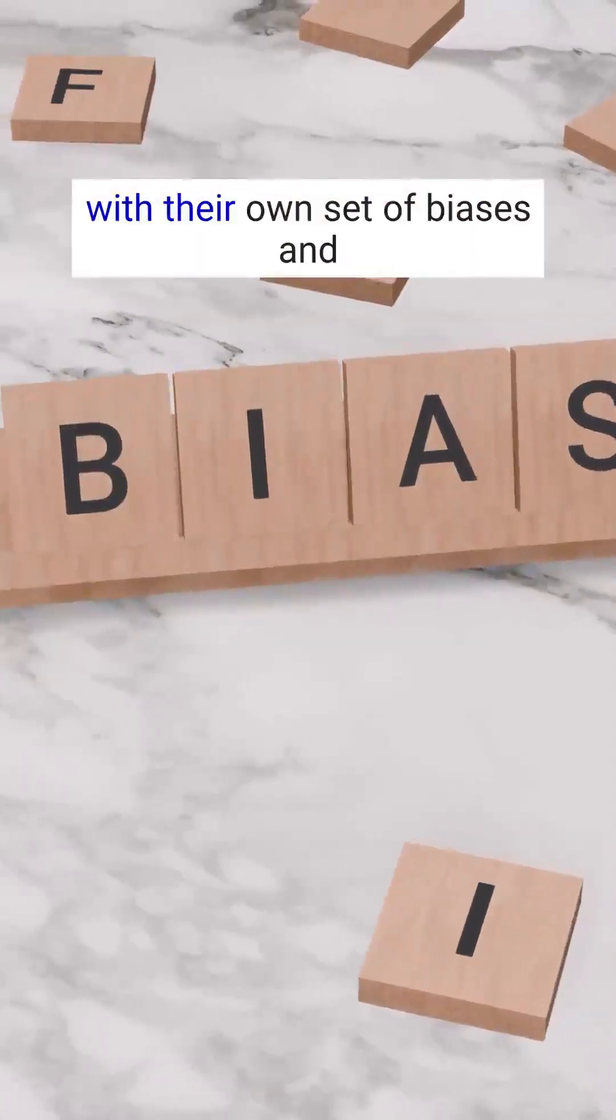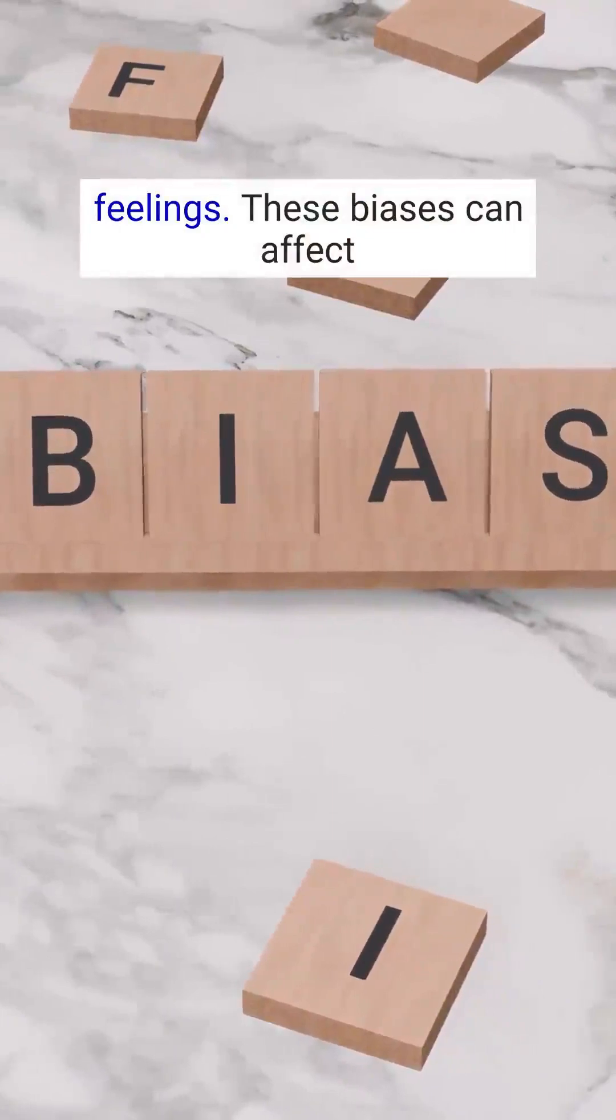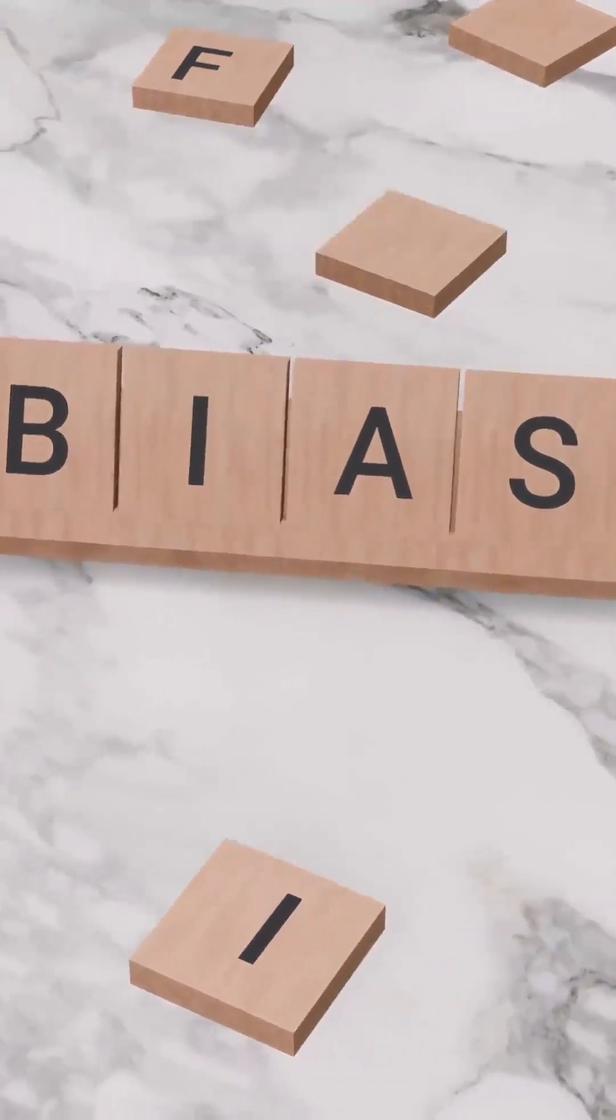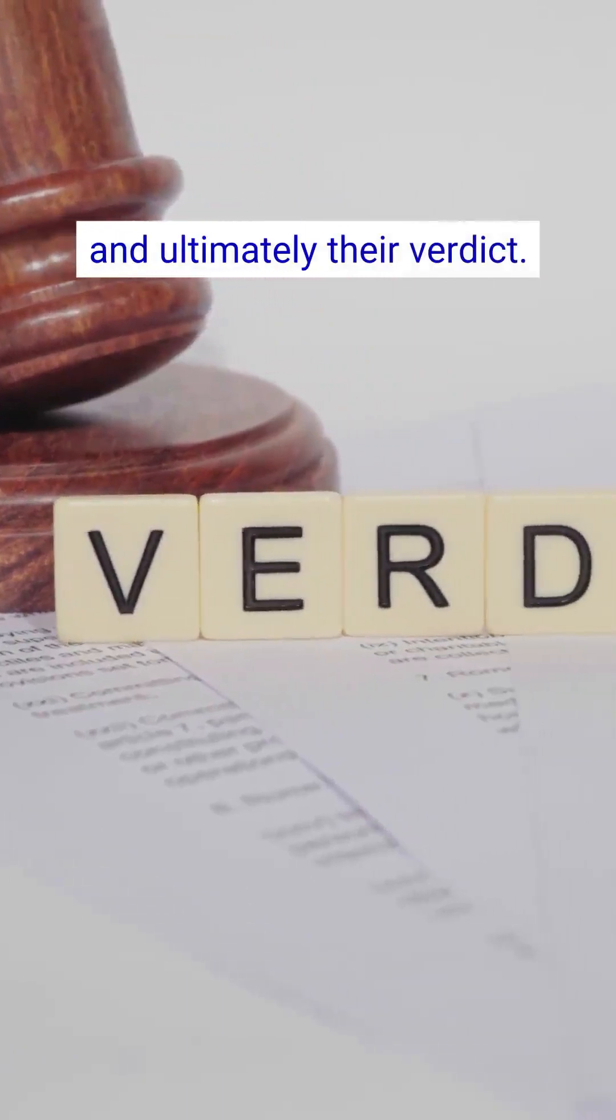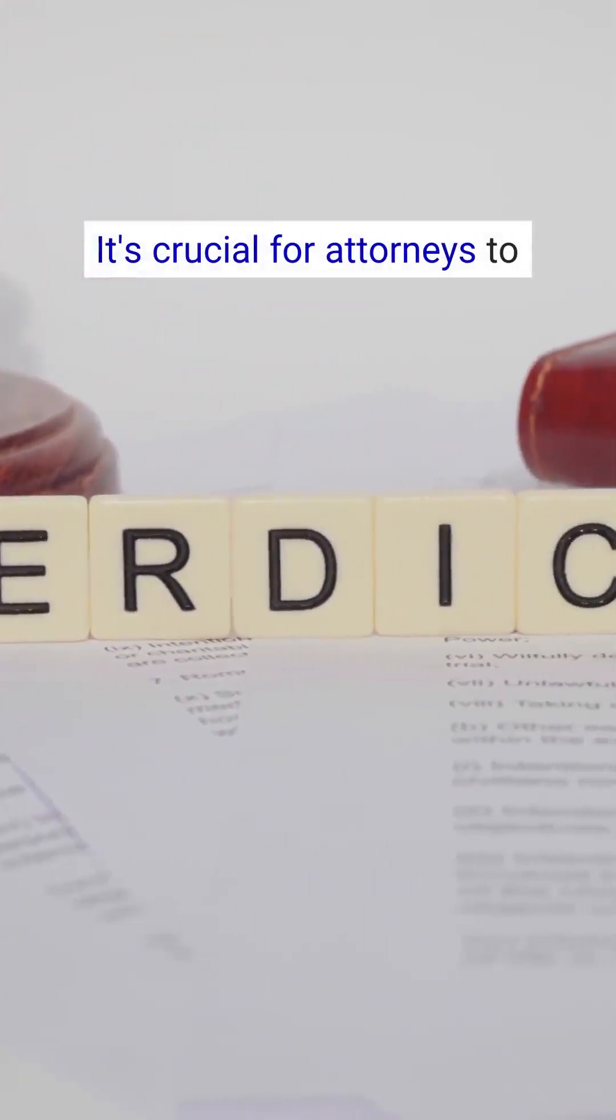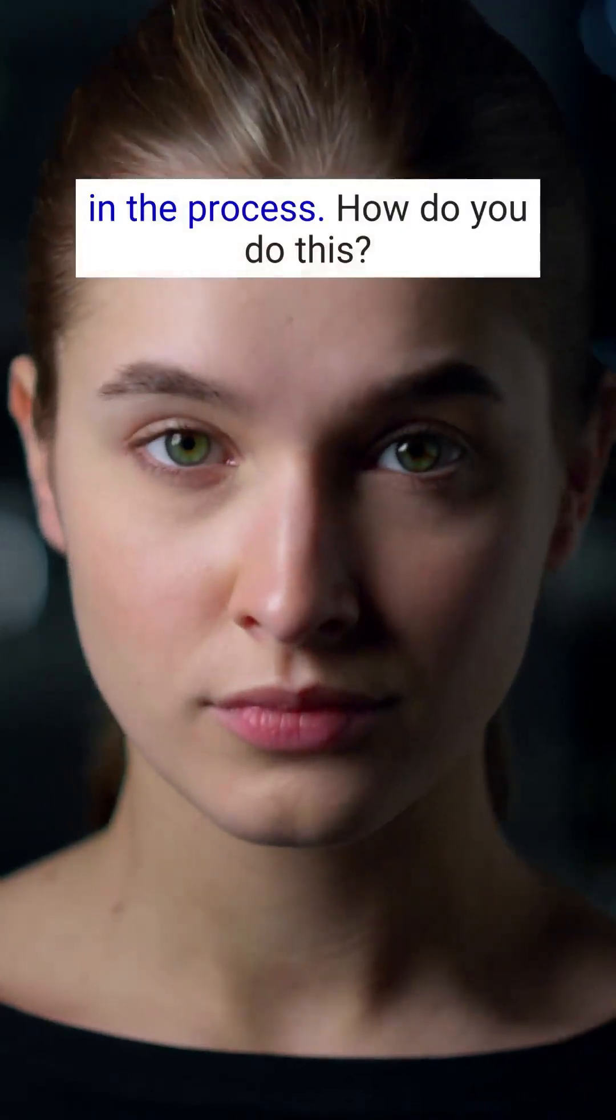Every juror comes into the courtroom with their own set of biases and feelings. These biases can affect how they interpret evidence and ultimately their verdict. It's crucial for attorneys to identify these attitudes early in the process.